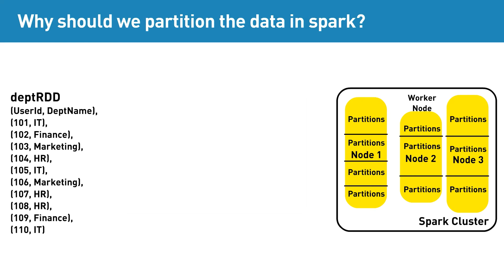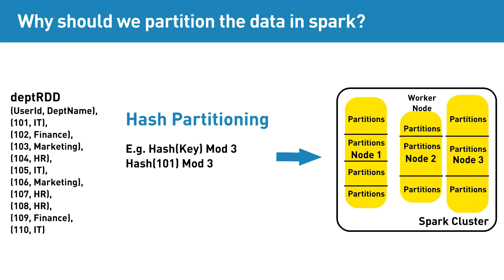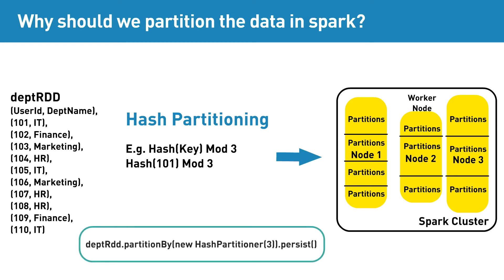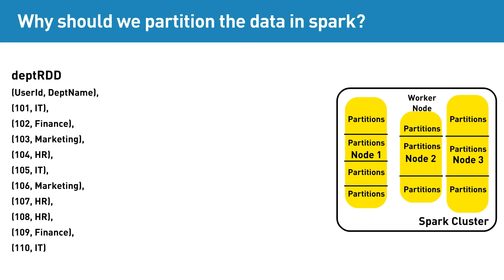Hash partitioning: when we hash partition the key and then take Modulo of the number of partitions, the process is called hash partitioning. This can be done by using the partitionBy transformation on DepartmentRDD and passing the hash partition object to it as shown below.